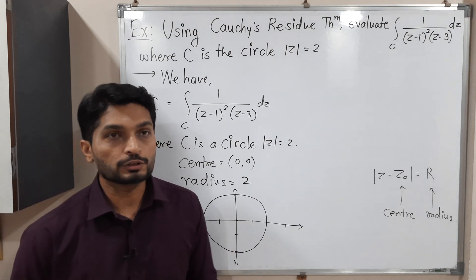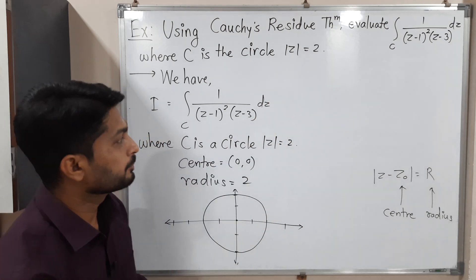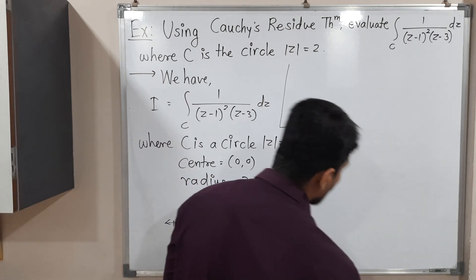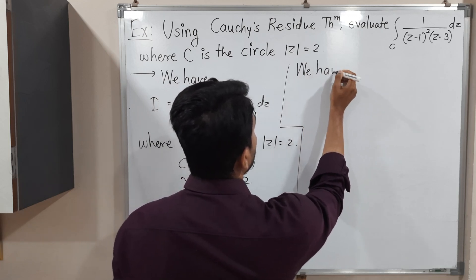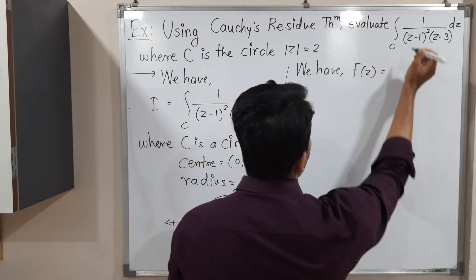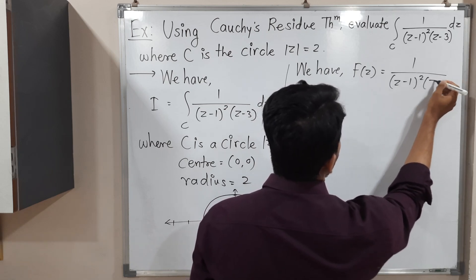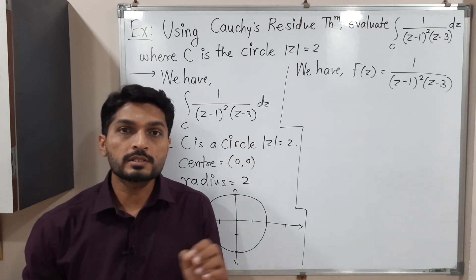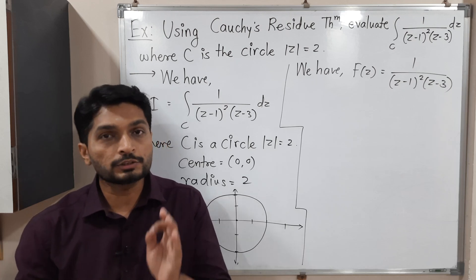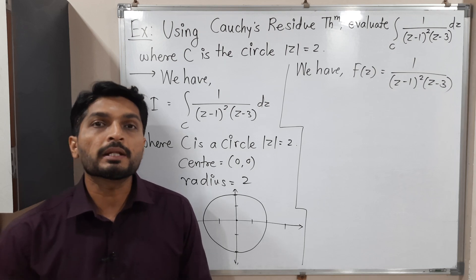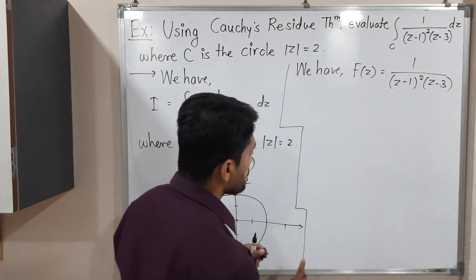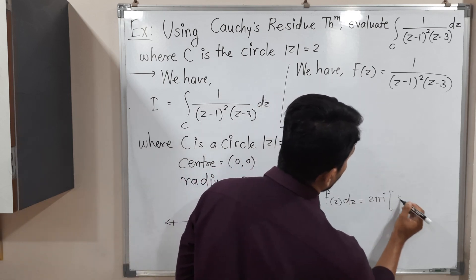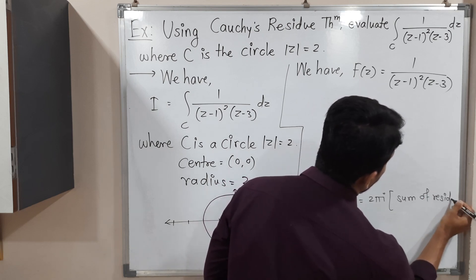The second important thing is the given function. Our function f(z) is 1 upon (Z minus 1) squared (Z minus 3). We have to solve the integral with the help of Cauchy's residue theorem. Let us understand the statement of Cauchy's residue theorem, then we will solve the remaining part. The statement is: integration over C of f(z) dz equals 2πi times the sum of residues.